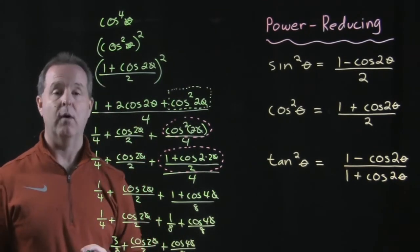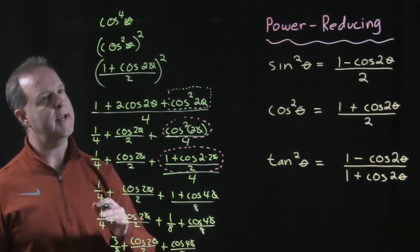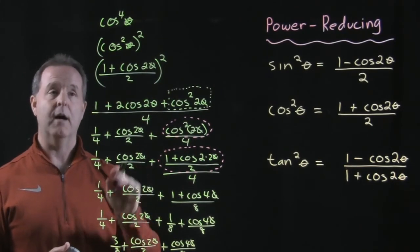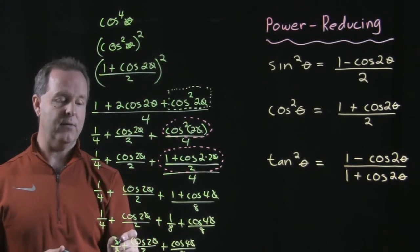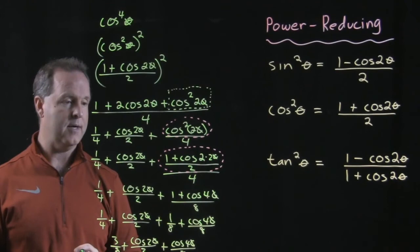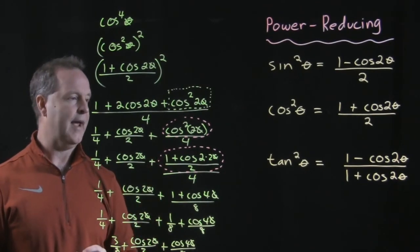My goal was to rewrite cosine of 4x, which I changed to theta halfway through. So the cosine of the fourth, cosine to the fourth of theta, to rewrite that into a final statement that has no powers greater than 1. And there we have it.